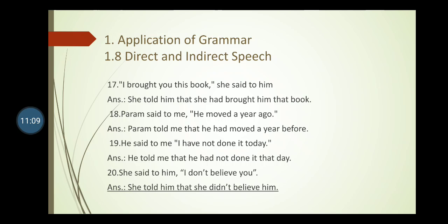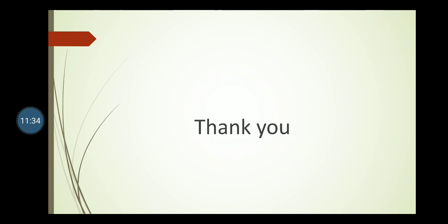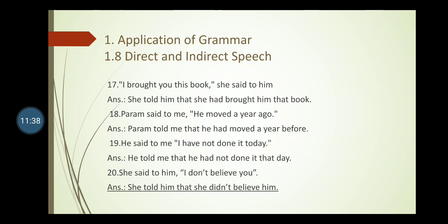Sentence twenty: She said to him, 'I don't believe you.' 'Said to him' becomes 'told him that'. 'I' changes to 'she', 'don't' changes to 'didn't', and 'you' changes to 'him'. Answer: She told him that she didn't believe him. In this way we are changing direct speech to indirect speech. Be careful about the five changes: reporting verb, conjunctions, pronouns, tenses, and adjective adverbs.